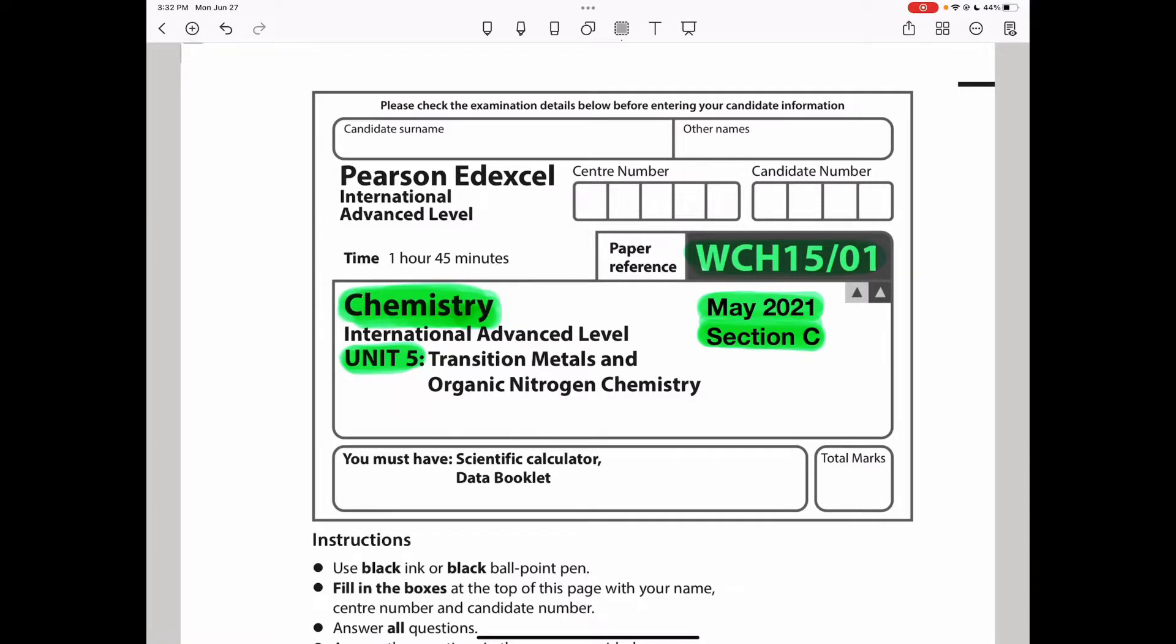Welcome to the Chemistry, Biology and Math Revision Hub. Today we are discussing the Pearson Edexcel International A-Level Chemistry, Unit 5, for May 2021, Section C.